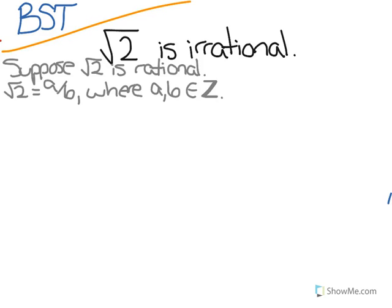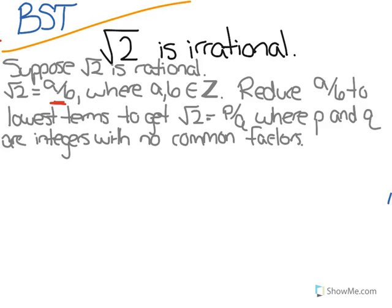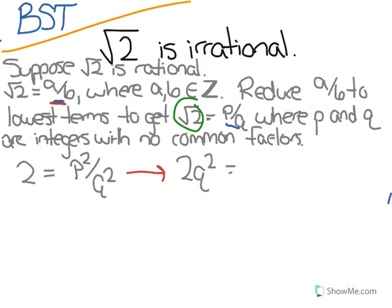We can then reduce this fraction, a over b to its lowest terms, to root 2 equals p over q, where p and q are integers with no common factors. So we're just, for the purposes of later in the proof, reducing or simplifying this fraction. Now we can manipulate this equation a little bit. We're going to square both sides to get rid of this square root. So we'll get 2 equals p squared over q squared. And then, we're going to multiply both sides by q squared. So we're going to get 2 q squared equals p squared.